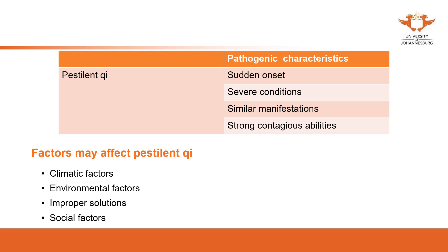The third characteristic is that all patients have similar manifestations — the symptoms of these patients are quite similar. For example, COVID-19 patients have coughing and fever; some develop different symptoms, but they share common symptoms. The fourth characteristic is strong contagious ability: it is human-transmitted and can infect others easily.